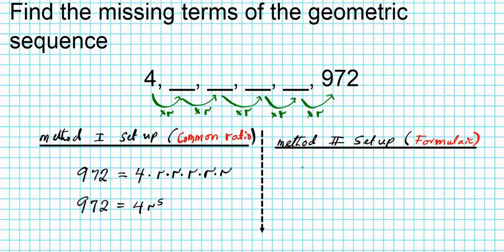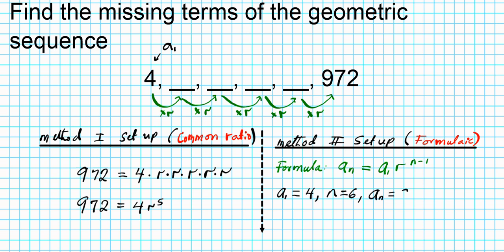The formula for the nth term of a geometric sequence is: Aₙ equals the first term times the common ratio raised to n minus 1. In this situation, the first term A1 is 4. How many terms are under consideration? 1, 2, 3, 4, 5, 6 — so n equals 6, including the first and last term and the four missing terms. Aₙ, in this case, is A6, which is 972.